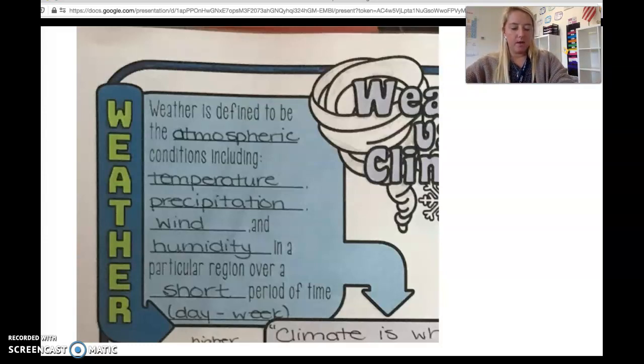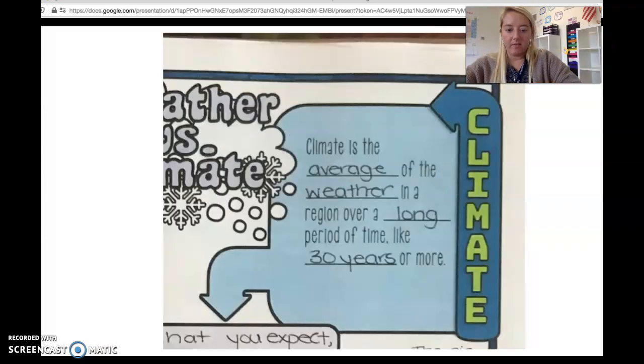In contrast, our climate is the average of the weather in a region over a long period of time. So this is 30 years or more. Climate is definitely something that we have tracked over time and we've decided like this is probably what's going to happen. It's an average, it's not talking about day-to-day stuff—that would be weather.